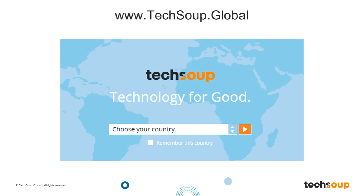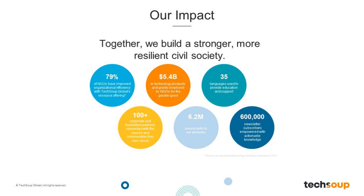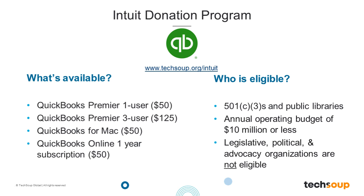Go ahead and chat in to let us know where you are joining from today. We have around almost 400 people logged in right now. TechSoup has been around since 1987, delivering donated products like Intuit, Adobe, and Microsoft products, as well as facilitating grants and other in-kind donations to the do-gooder sector around the world to the tune of $5.4 billion. If you are needing a donation of QuickBooks, you can find more at TechSoup.org/Intuit. Currently available are QuickBooks Premier 1 user, Premier 3 user license, QuickBooks for Mac, and QuickBooks Online subscription.